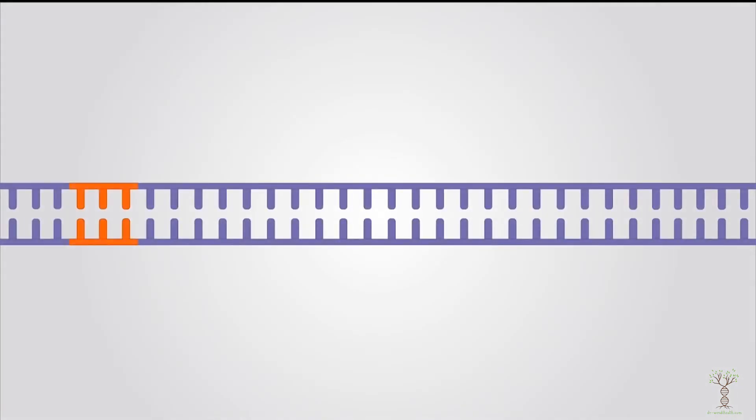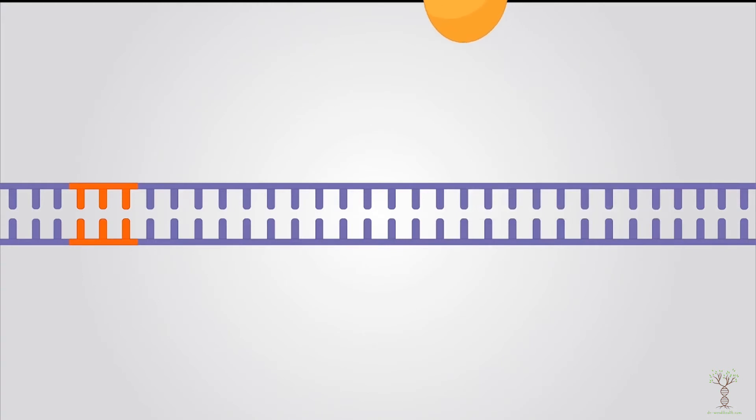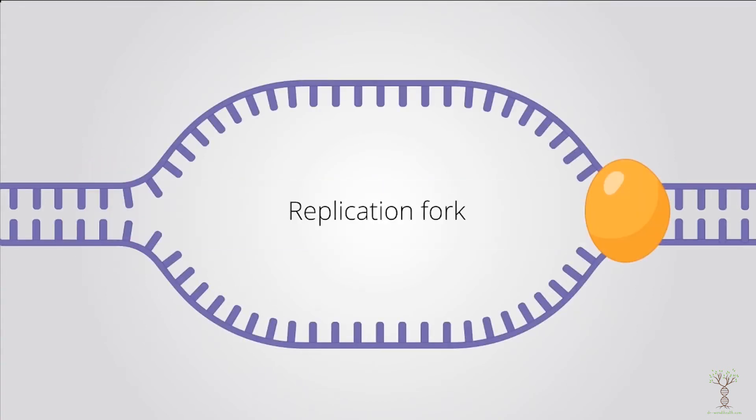DNA replication begins at a specific site called the origin of replication. Eukaryotic chromosomes have multiple origins of replication. The first enzyme is going to be helicase and this enzyme will break the hydrogen bonds between the bases on opposite strands. When it starts to break those hydrogen bonds we produce what we call a replication fork.